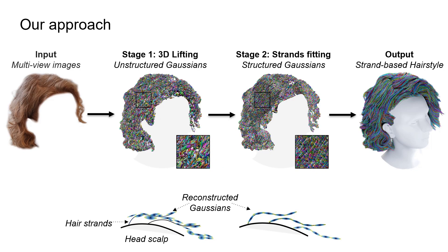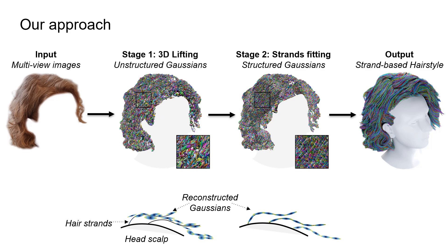Our method reconstructs 3D hair from images captured with a smartphone or a DSLR camera. During the first modeling stage, we perform 3D lifting of the scene using unstructured Gaussians that are aligned with the hair growth directions via our proposed line lifting technique.